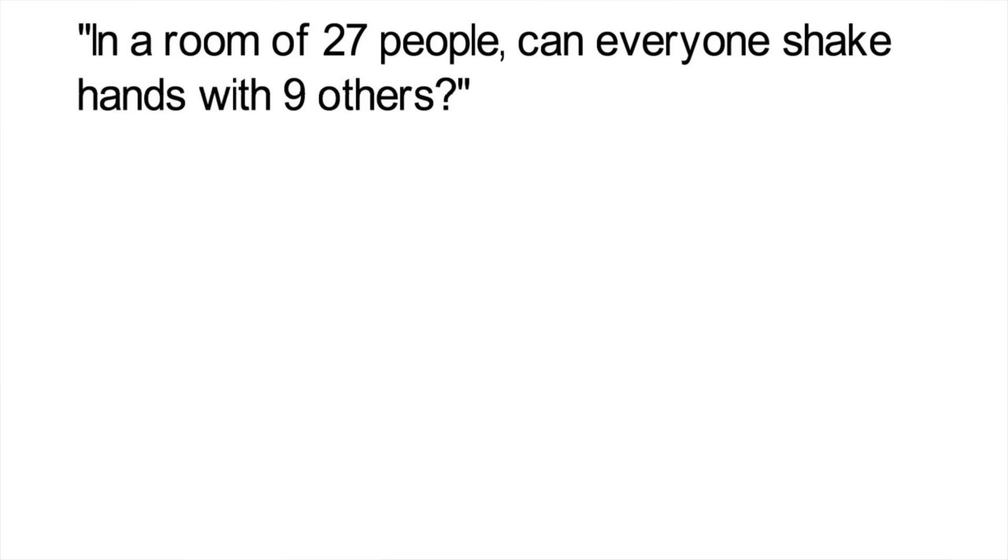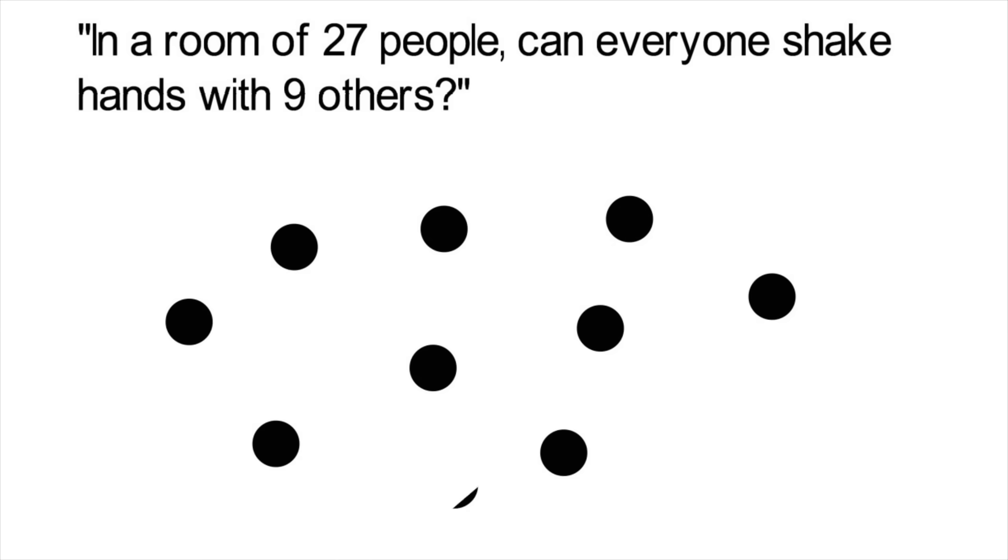Many of these problems are not very easy, but here's a simple question you can use graph theory to solve. In a room of 27 people, can everyone shake hands with 9 others? Well, since this is graph theory, we'd have 27 nodes which represent the people. I won't show all 27 dots, but here are some to illustrate the solution.